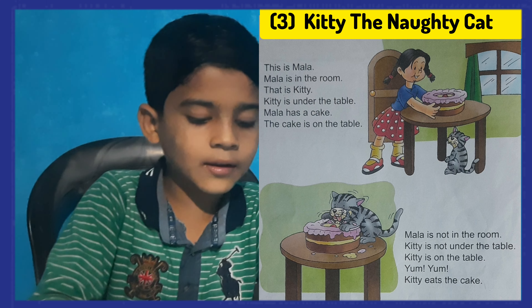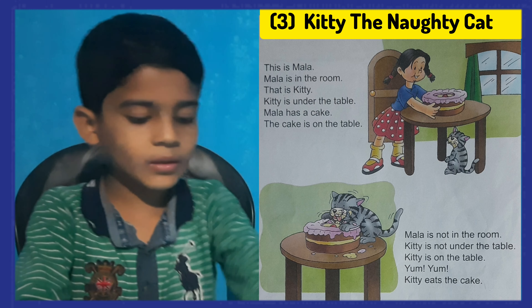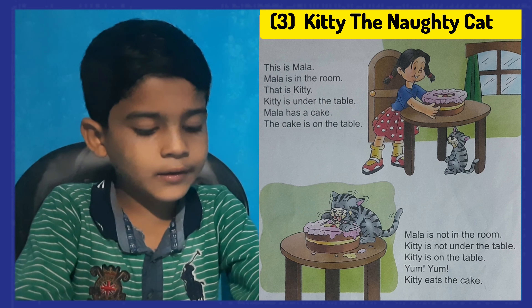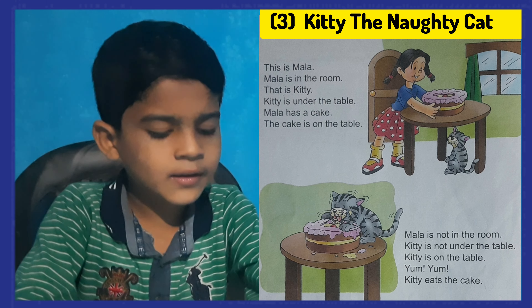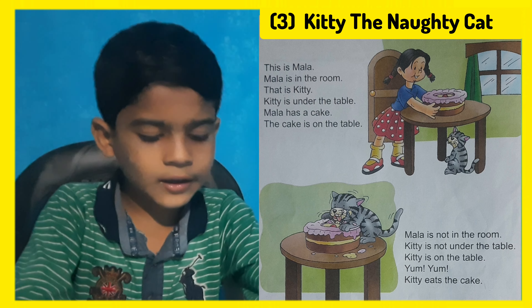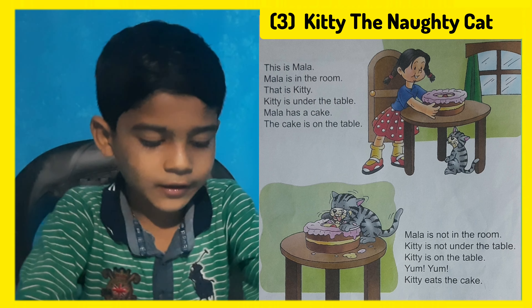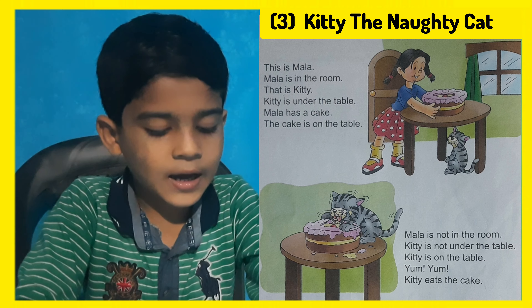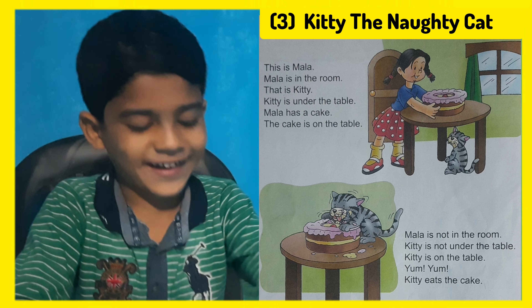Mala is in the room. That is Kitty. Kitty is under the table. Mala has a cake.